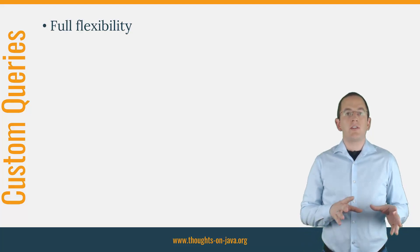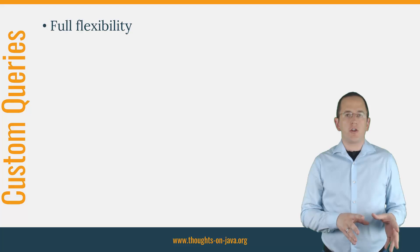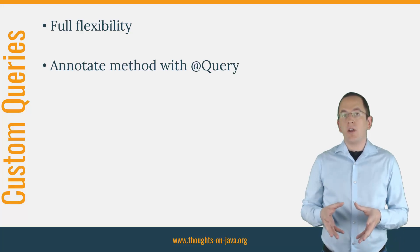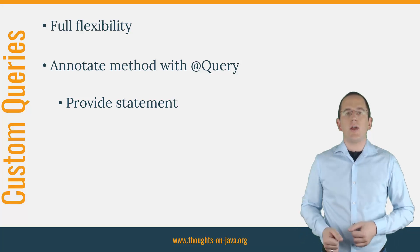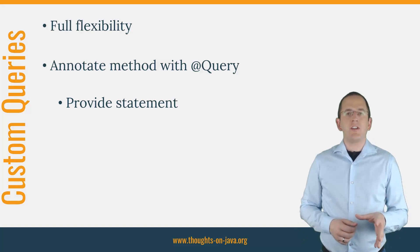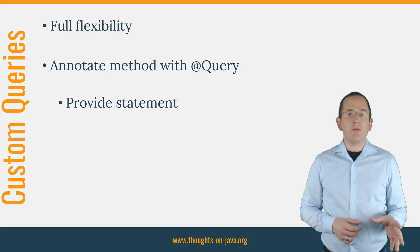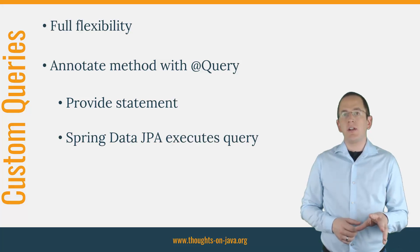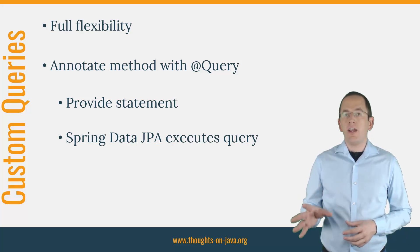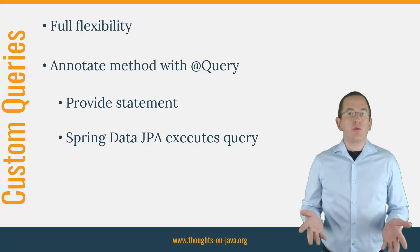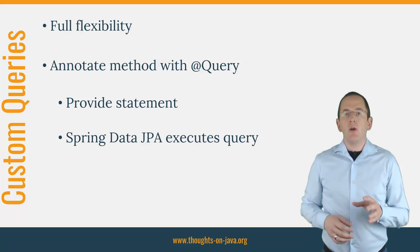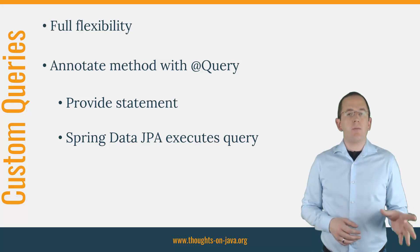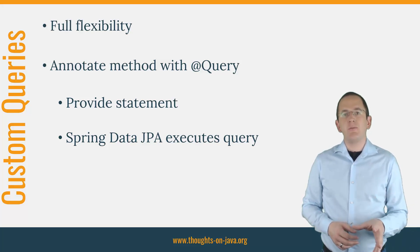The only thing you need to do is to define a method in your repository interface, annotate it with a @Query annotation, and provide the statement that you want to execute. Spring Data JPA provides the required JPA code to execute the statement as a JPQL or native SQL query. Your preferred JPA implementation, for example Hibernate or EclipseLink, will then execute the query and map the result. Let's take a more detailed look at the two query options.